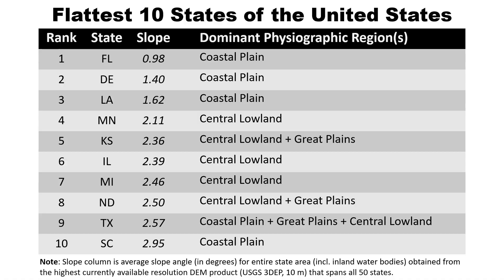Florida is really a very flat state. The top 10 all have average slope angles of less than 3 degrees, while the average slope among all states is more like 6 degrees. These average slopes were obtained from a 10-meter DEM, so that captures pretty small topographic features. I went for the higher-resolution standpoint, because it's possible to do that with Google Earth Engine.